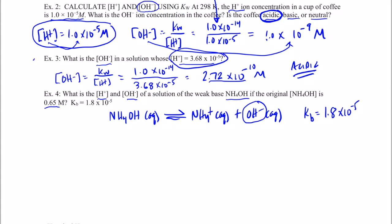This is an ICE box problem — Initial, Change, and Equilibrium concentrations. Initially, the ammonium hydroxide concentration is 0.65 molar, and we have none of the products. The ammonium hydroxide decreases by x, while the NH₄⁺ ions and hydroxide ions each increase by x. So at equilibrium, we have 0.65 minus x moles per liter of ammonium hydroxide — which by the way is often written as ammonia and water — and x moles per liter each of ammonium ions and hydroxide ions.